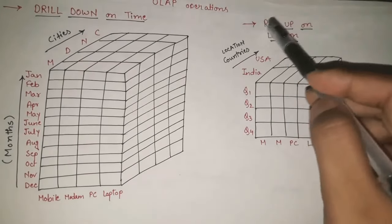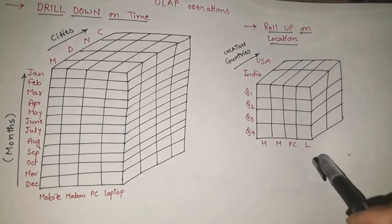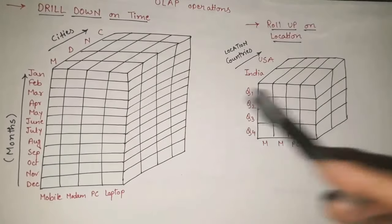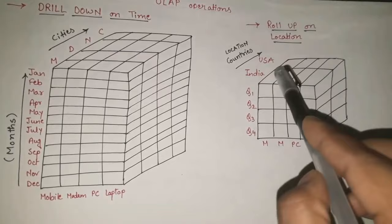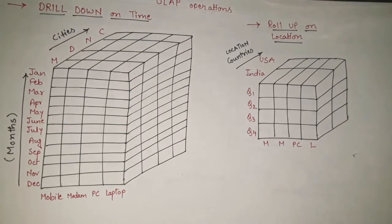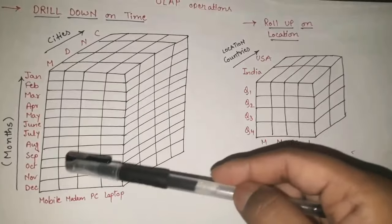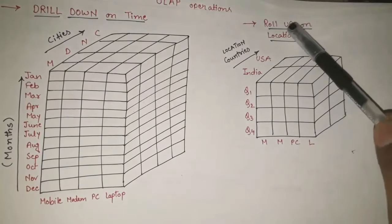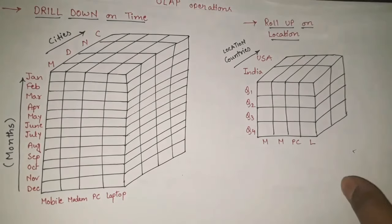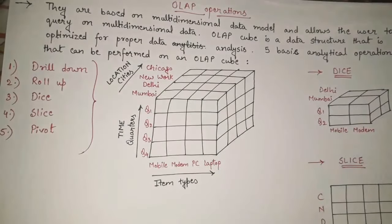We have rolled up on location — quarters and items remain as they are. Instead of four rows we now have just two rows, so instead of sixteen cells we have only eight cells. Roll up is just opposite to drill down: in drill down the number of rows and columns increases, whereas in roll up we want generalized information so the number of rows and columns decreases.